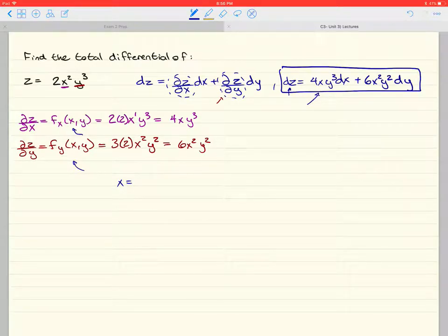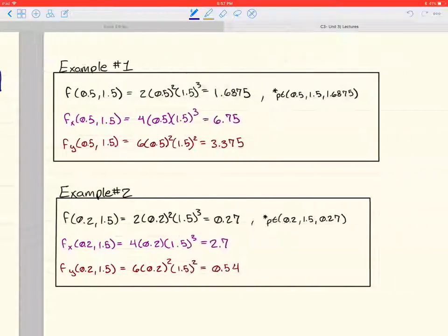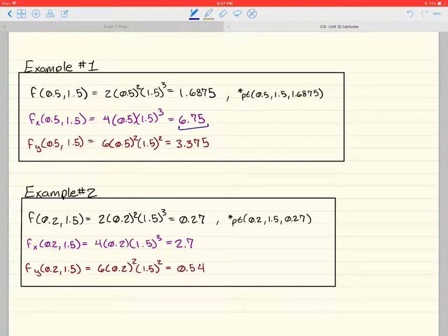I picked a point, x equals 0.5, and y equals 1.5, plugged it in, plotted the surface of this graph, found the points, and then put the points into these partials to find our slopes. Those are our slopes, our partials, with respect to y and x. And so, here's our point. Here are our slopes with those partials.